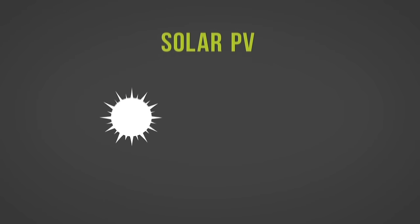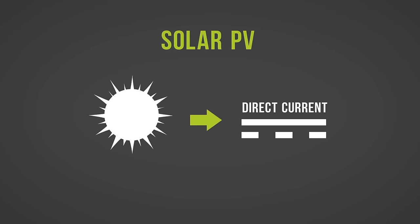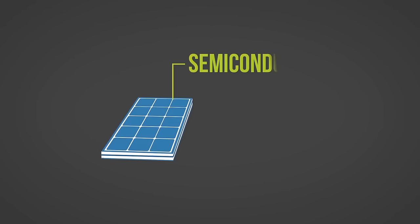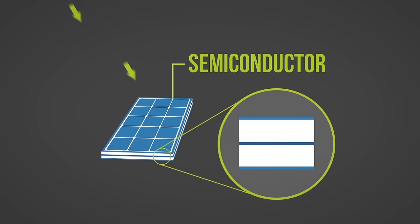is a technology that converts the sun's energy into direct current electricity by using semiconductors. When the sun hits the semiconductor within the PV cell, electrons are freed and form an electric current.